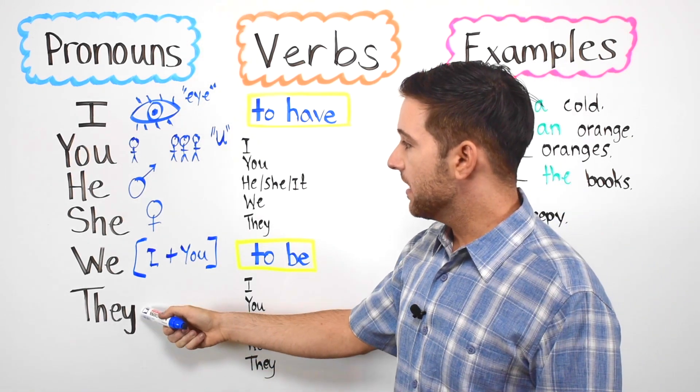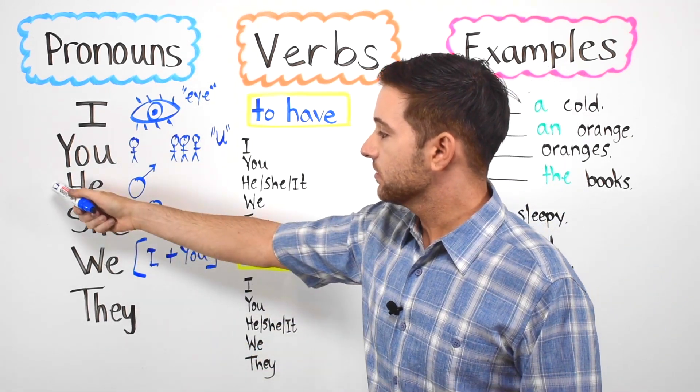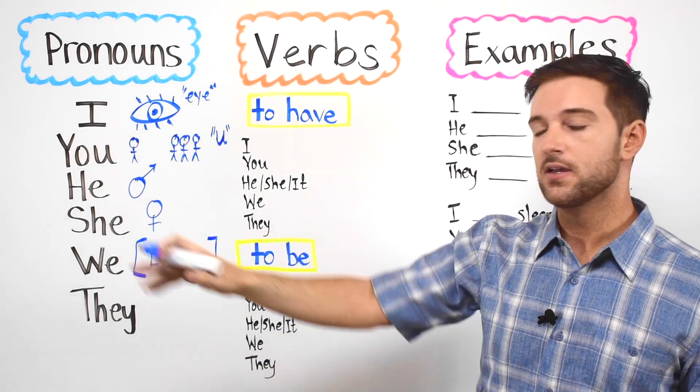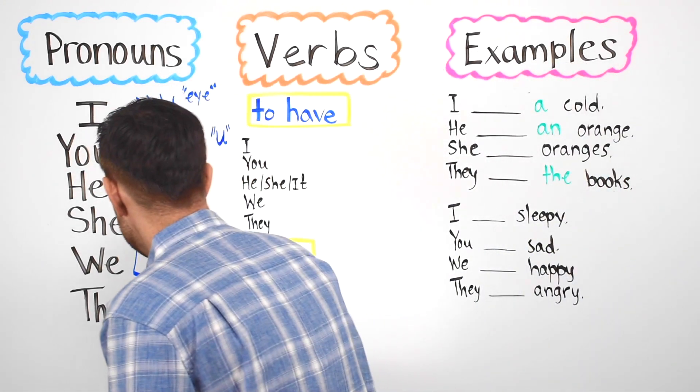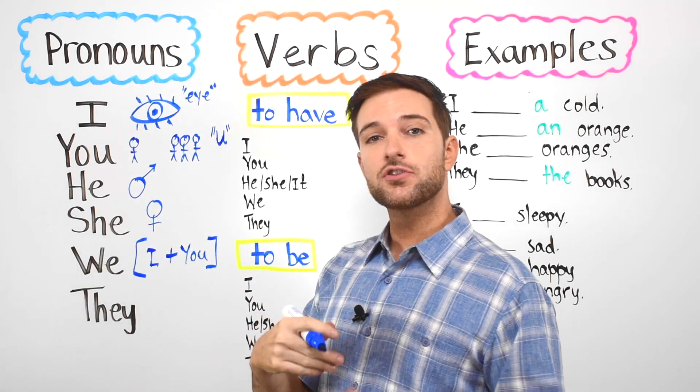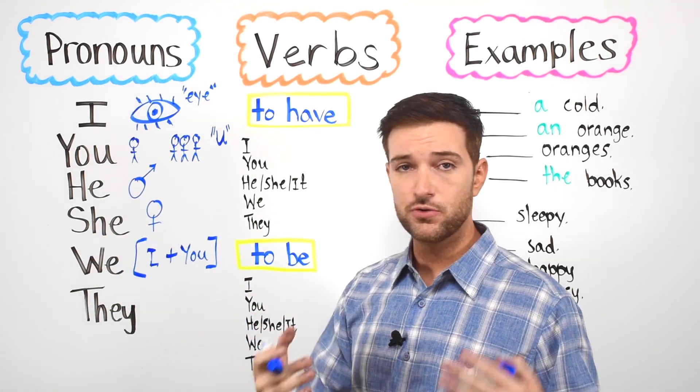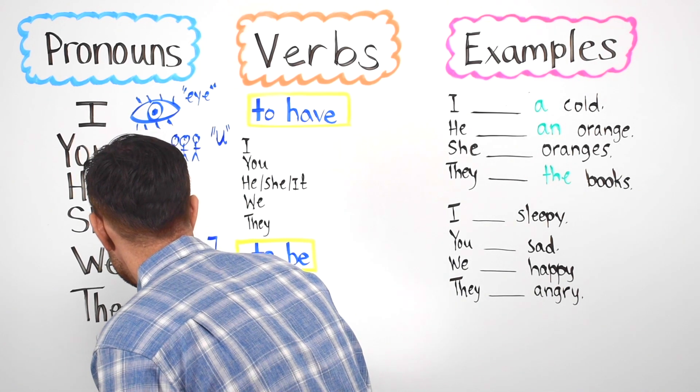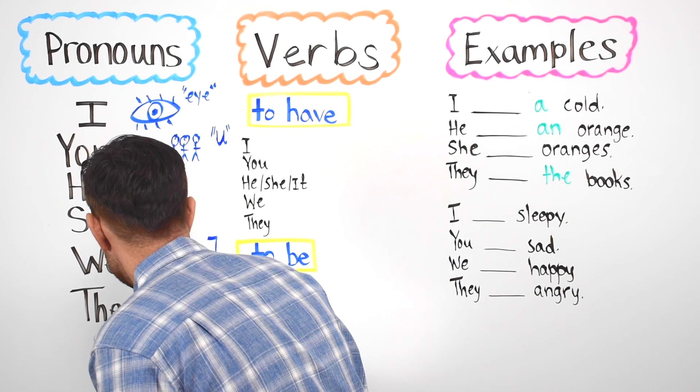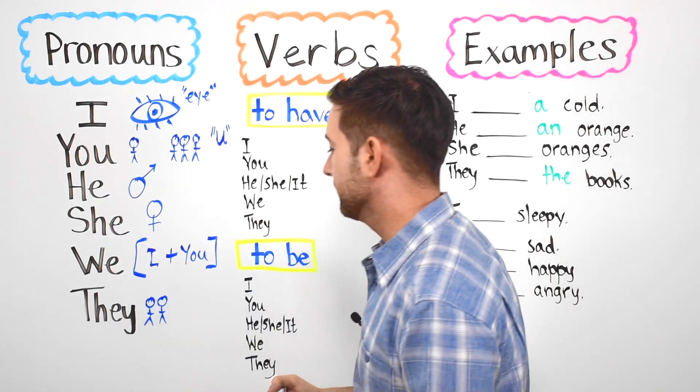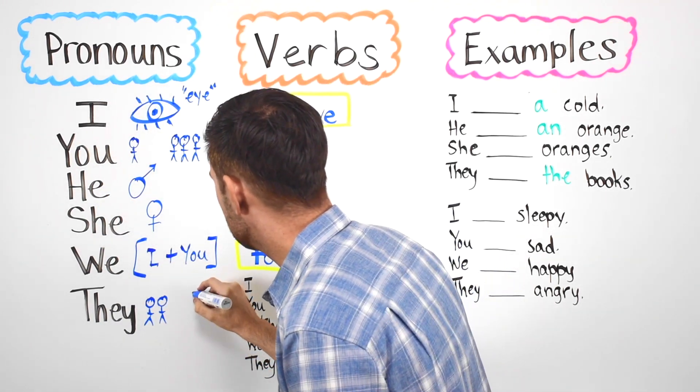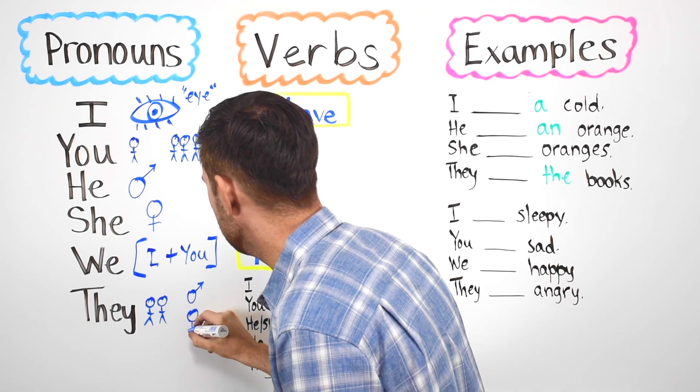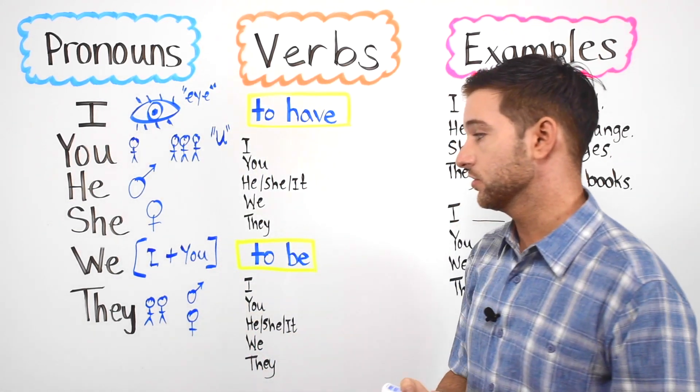Finally we have they. They is similar to he and she. It refers to people, but it refers to not one person. It refers to more than one person, so two three four five people. And they can be used for both boys and it can be used for girls as well.